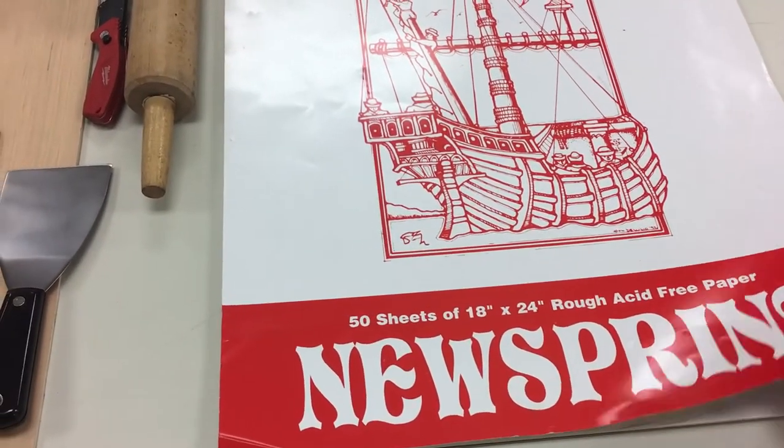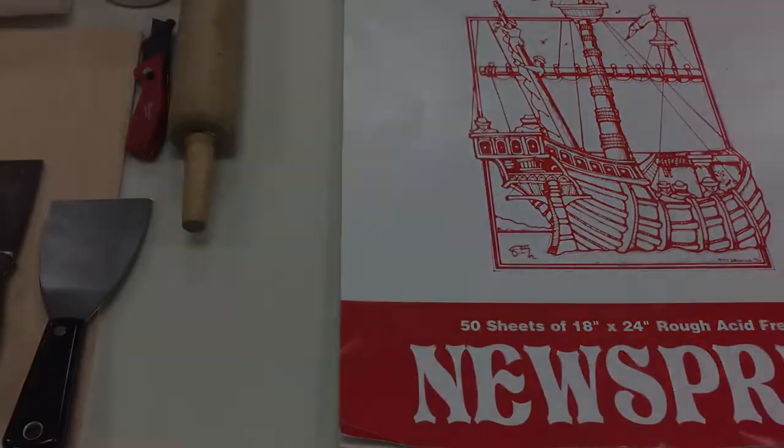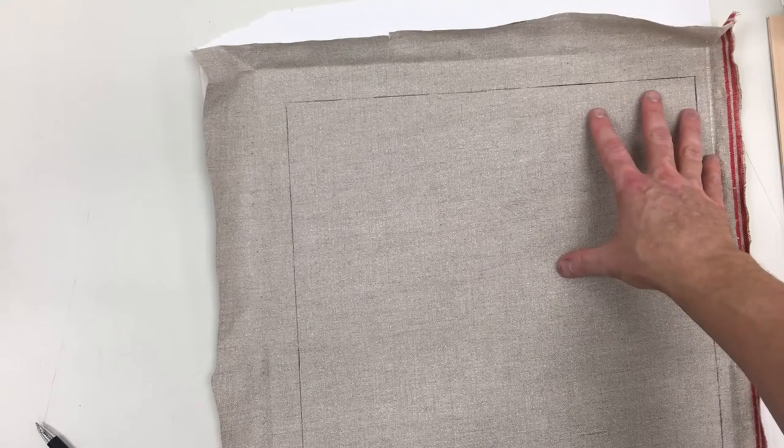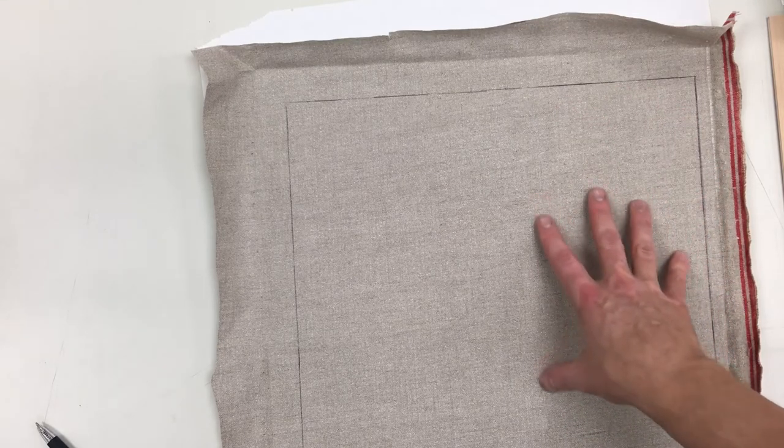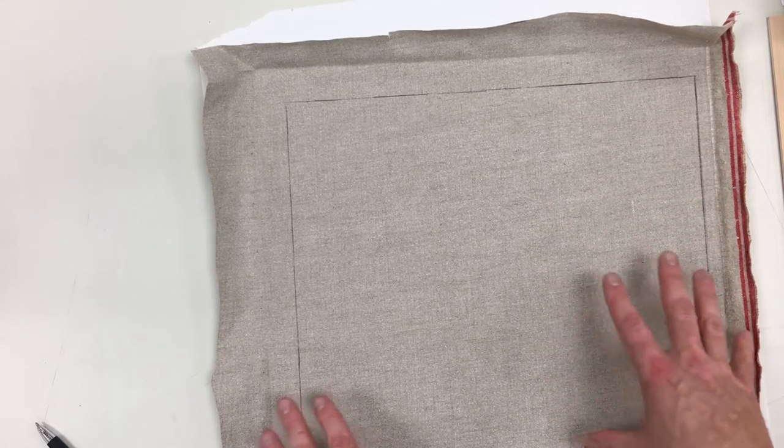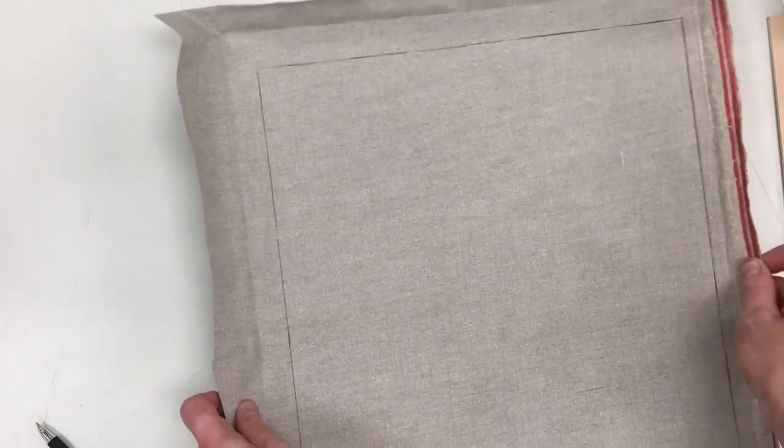So first thing I'm going to do is lay out some of this newsprint and put the canvas on top of it. So Natty had placed her board on the back of the canvas and that's very important especially if you're going to be mounting a pre-painted panel onto a board. You want to make sure it's lined up exactly where you want it.